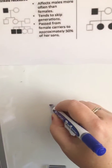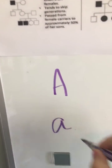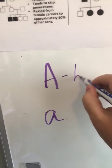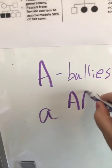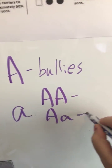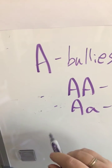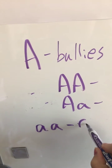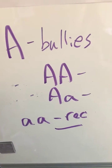Let's talk about what makes something dominant versus recessive. We have our big letters and our little letters. I like to say the big letters are our bullies — you can have a big A and it's going to express the dominant. You can have a big A with a little a and it's still going to express dominant. But in order to get a recessive condition, you have to have two copies of the little a. This is why things tend to skip generations.